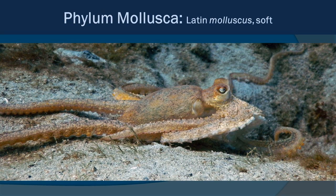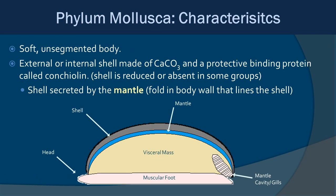First up we have phylum Mollusca. The Latin 'molluscus' means soft, and these are soft-bodied animals. A big characteristic of this group is that they're soft-bodied and unsegmented. Most molluscs are known for having an external shell made out of calcium carbonate — think snails and conchs. Some molluscs will have an internal shell, and some don't have a shell at all.